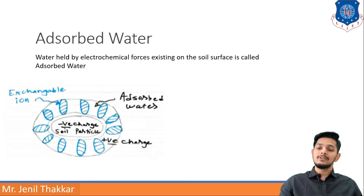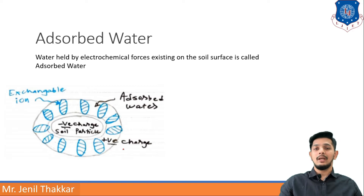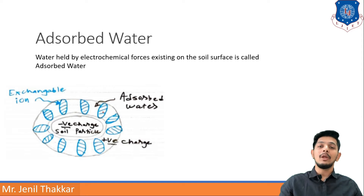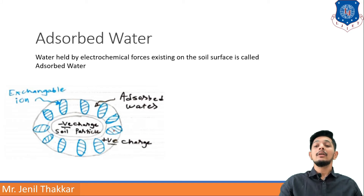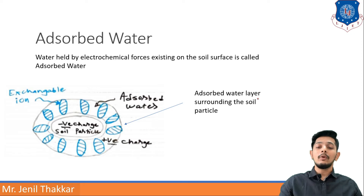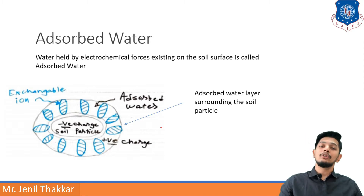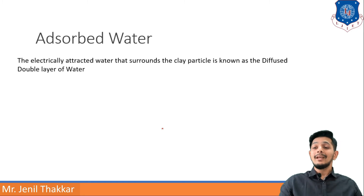In the center, negatively charged soil particles are present, and in the periphery, exchangeable positively charged ions are there. They attract each other, and in between these positively charged ions lies the adsorbed water layer surrounding the soil particles.